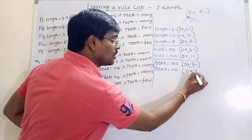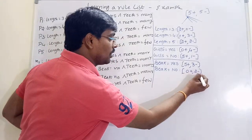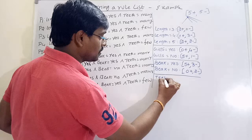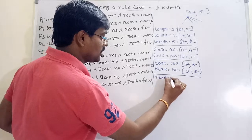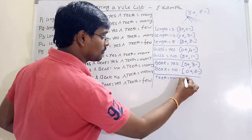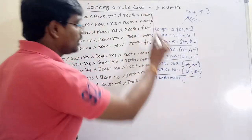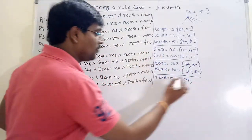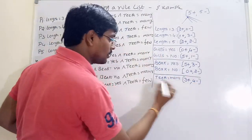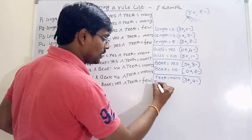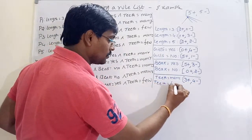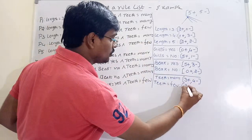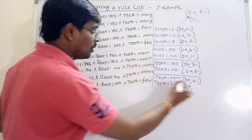Finally for teeth: teeth equal to many has three positives and four negatives. Teeth equal to few has two positives and one negative.